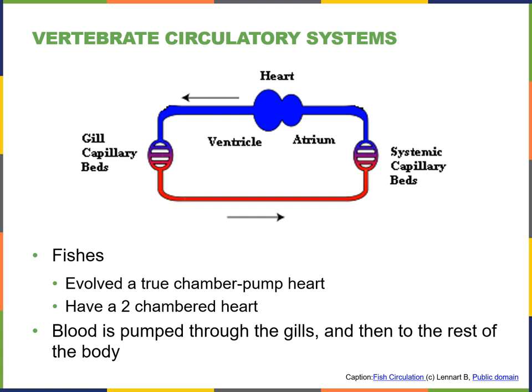A fish actually has a two-chambered heart, whereas a human or other mammal has a four-chambered heart. Their blood goes out of the heart into the gills, where it gets oxygenated, and then it goes to the rest of the body, and then comes back into the heart to go through the process again. It's a pretty simple system, unlike ours which is four-chambered — we'll go deeper into that in a second.